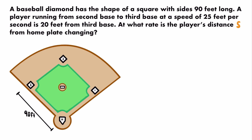The first thing we want to do is make sense of the information we've been given. We have a diagram here of a baseball diamond. There are four different bases: home base, first base, second base, and third base. The distance between each of those bases is 90 feet, so the distance between any two adjacent bases is 90 feet.